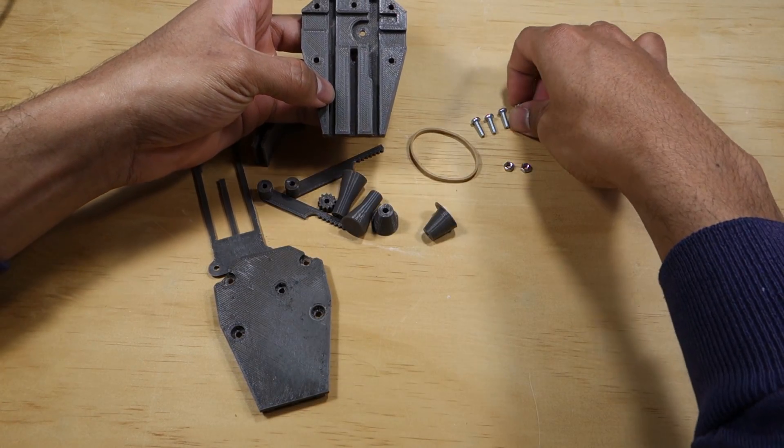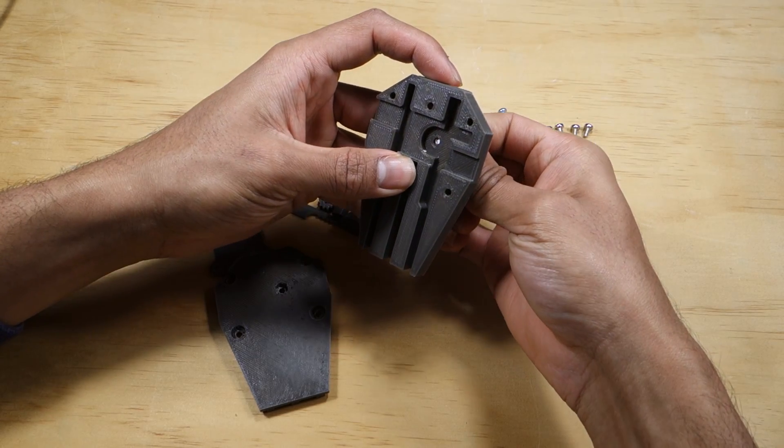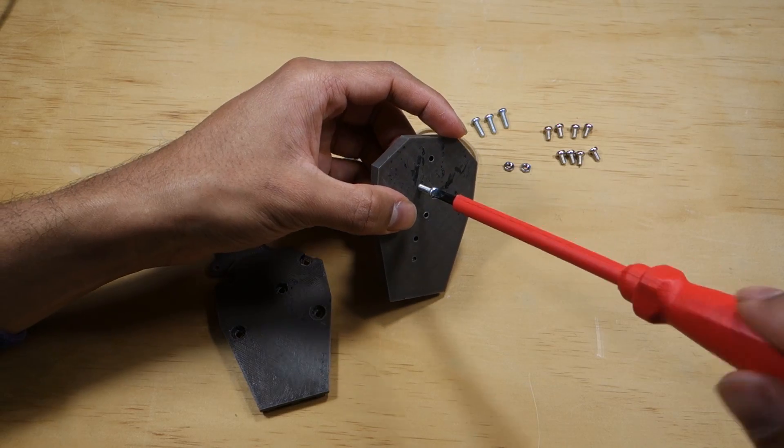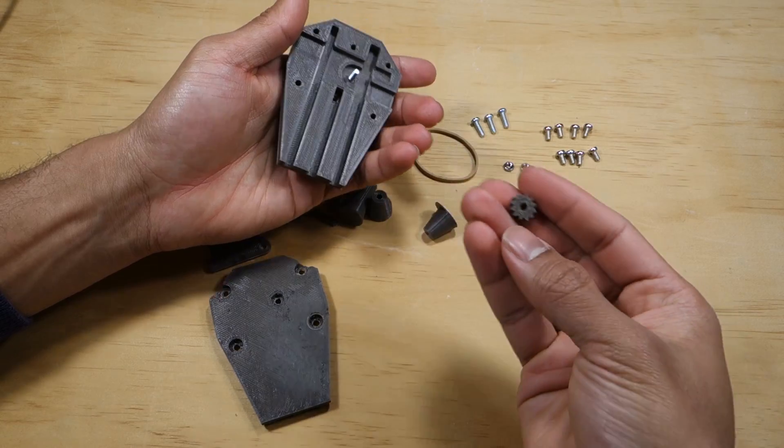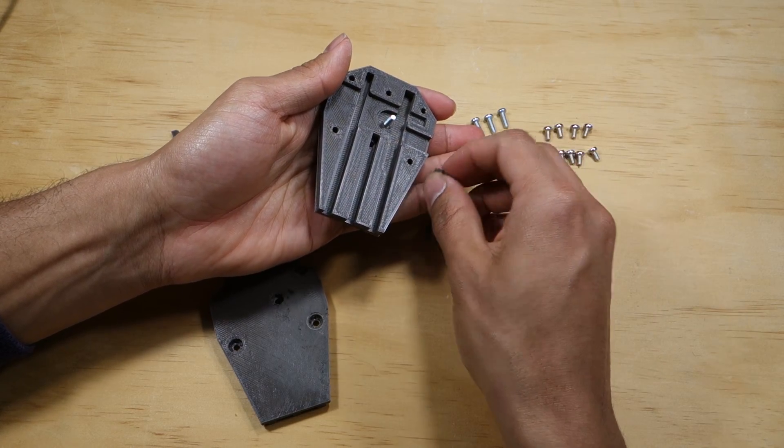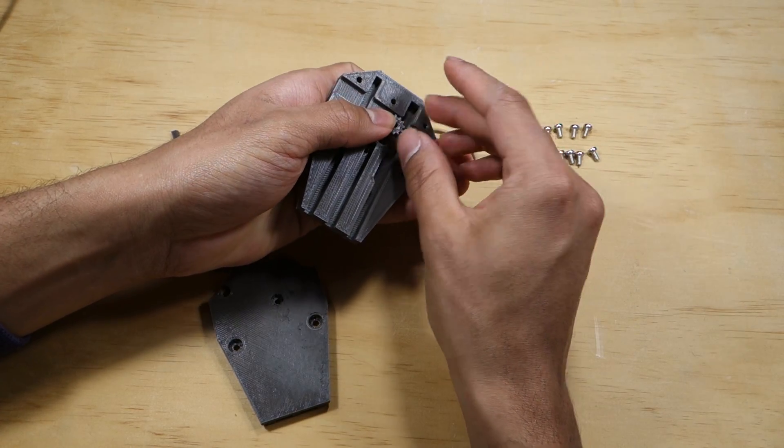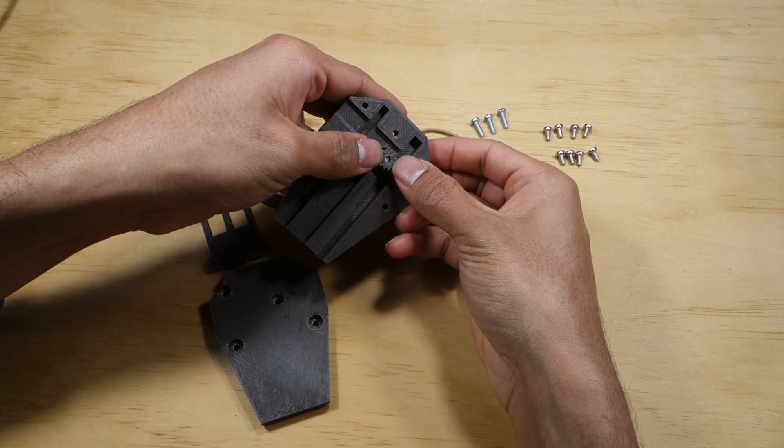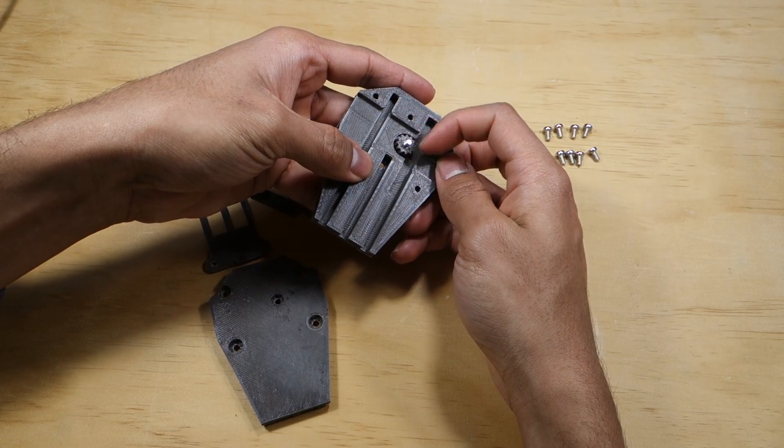Start by screwing a 10mm M3 screw into the base as shown. Turn the base around and push the gear over this screw. Twist it around a bit and make sure it can turn freely.